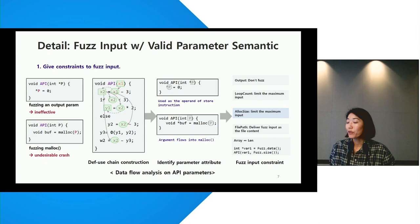We performed data flow analysis on each API parameter by creating a def-use chain, and at the same time, we inspected the key parameter attributes that we defined. These are output, loop count, allocation size, file path, and array length attribute. This information was then used to give constraints to the fuzzing input.